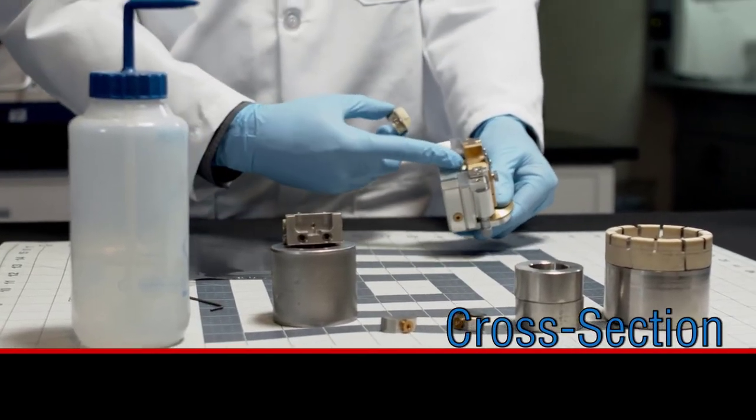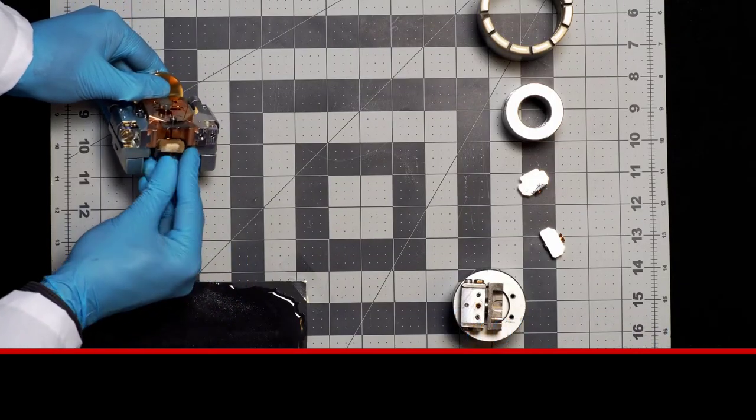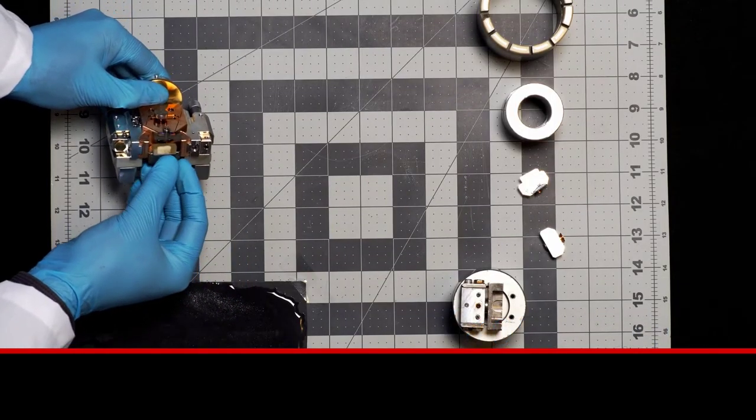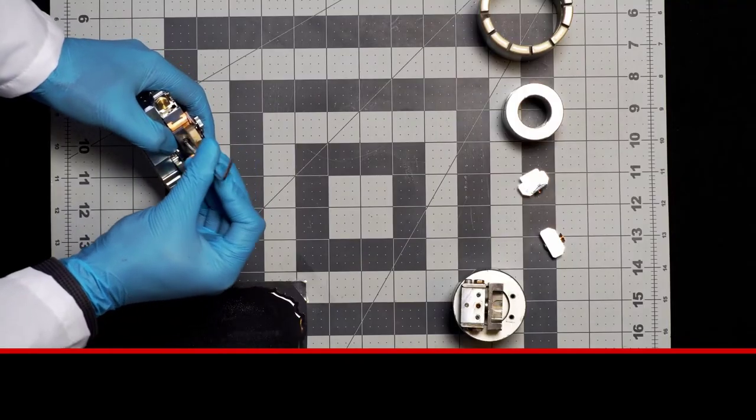The sample stub provided with the ArBlade 5000 can easily be inserted into the cross section stage assembly. An Allen wrench is all that's needed to secure the sample to its stage.